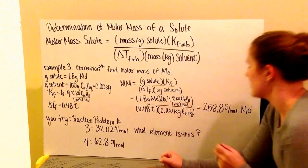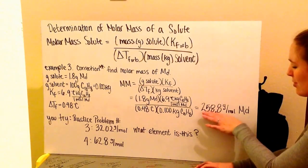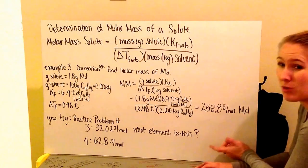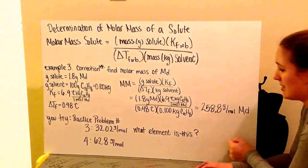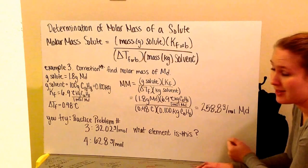When I plug all this into my calculator, I get 258.8 grams per mole. I go to my periodic table and check, and in fact this is the molar mass, so I know I've done it right.